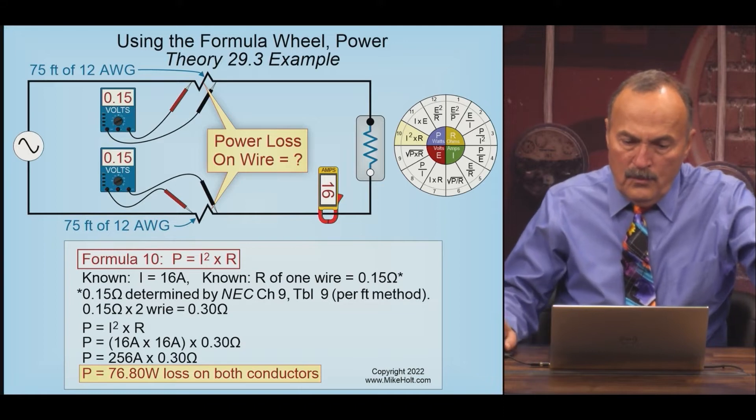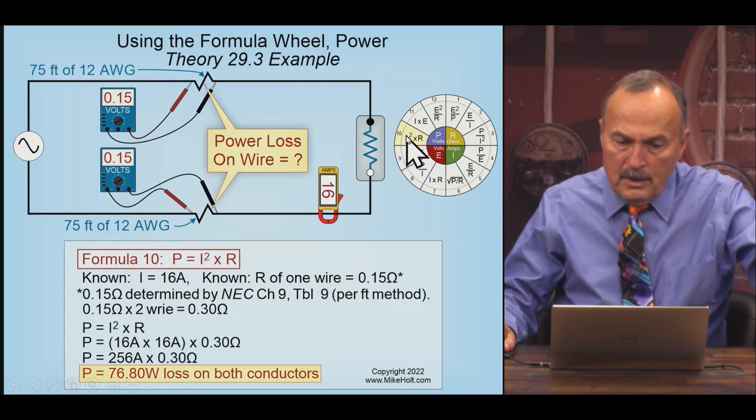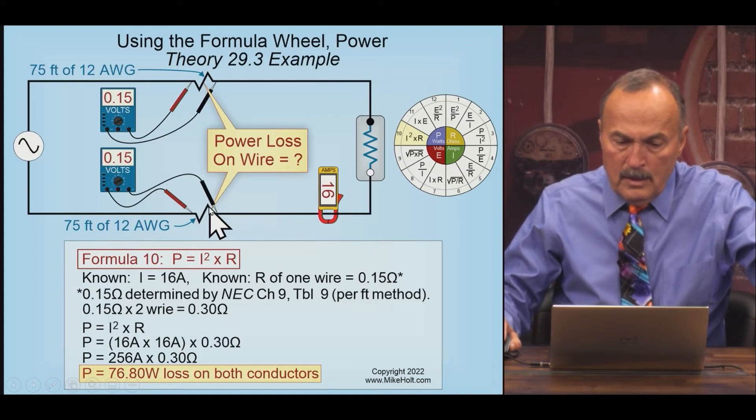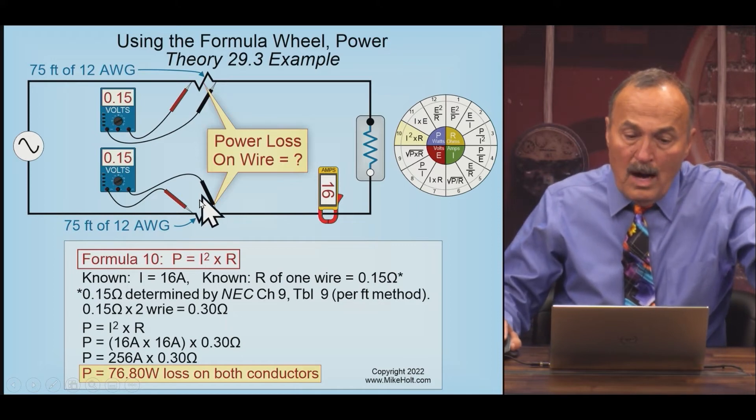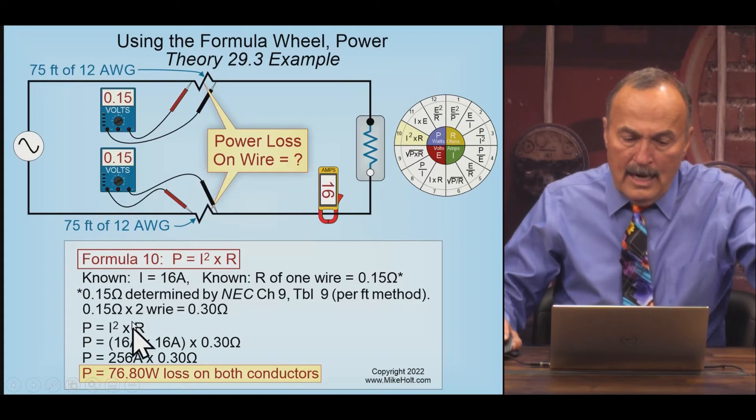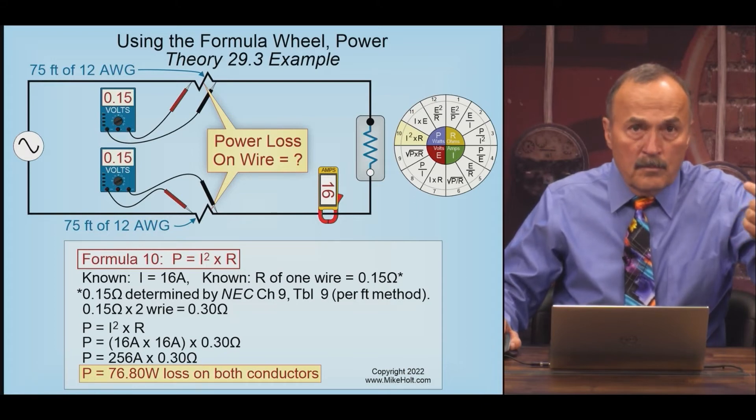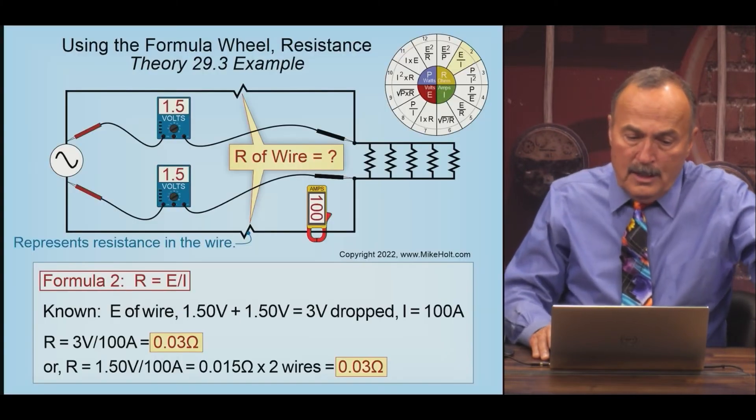I'm looking for the power. That's going to be number 10: I squared R, because I know the I and I know the R. Now this is going to be 0.15 ohms for this wire, 0.15 ohms for this wire. You add them together, it's going to be 0.3. So if you know the resistance of the wires and you know the current in this series circuit will remain the same, 16 amps, I squared R. Know the question, find the formula, do the math.